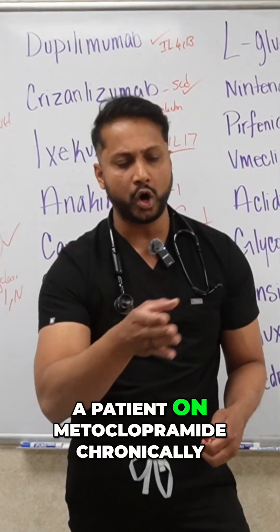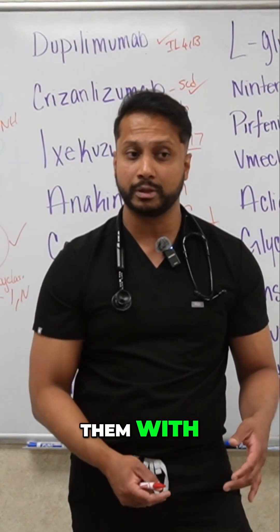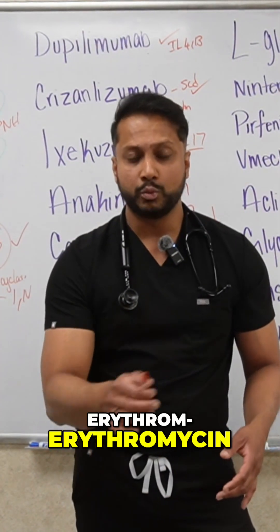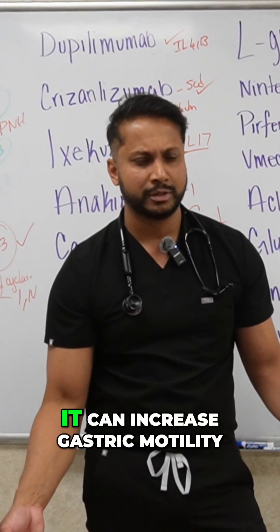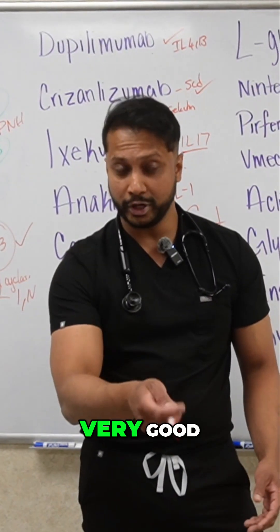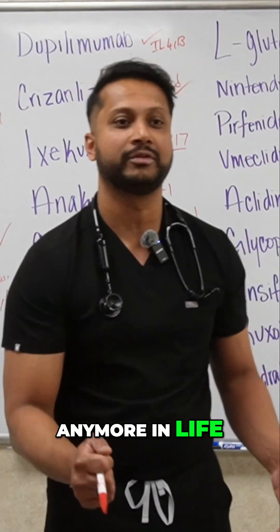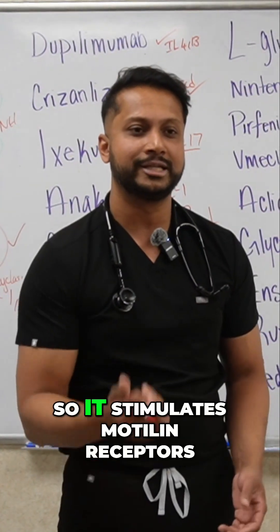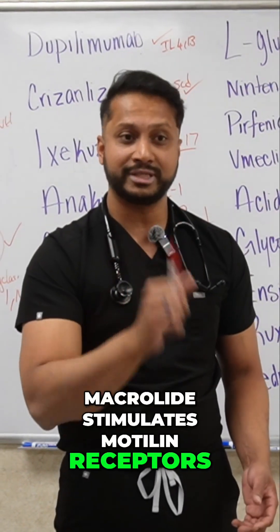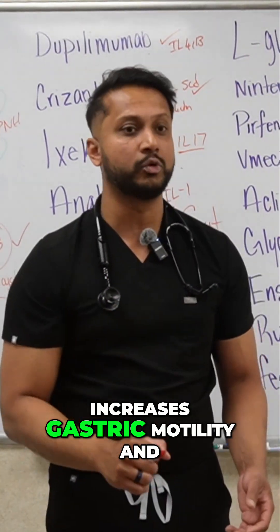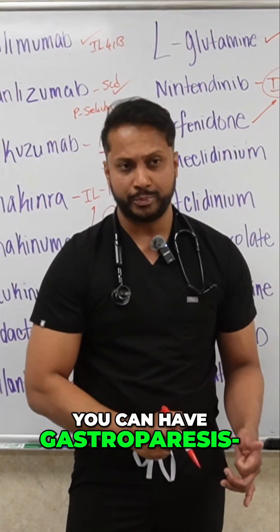When you have a patient on metoclopramide chronically, you want to worry about extrapyramidal side effects. Now, acutely, what can you treat them with? Erythromycin. Why are we using an antibiotic to treat patients with gastroparesis? It does increase gastric motility — it stimulates motilin receptors. Macrolides stimulate motilin receptors and as a result increase gastric motility, which is also why it can cause diarrhea. So from a GI point of view, you can have gastroparesis.